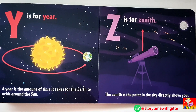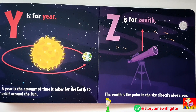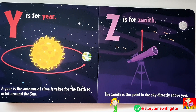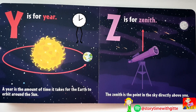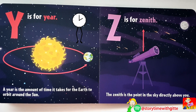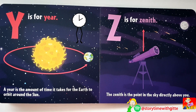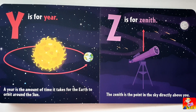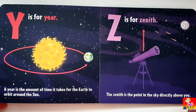Y is for Year. A year is the amount of time it takes for the Earth to orbit around the Sun. Z is for Zenith. The zenith is the point in the sky directly above you.